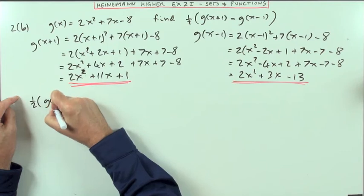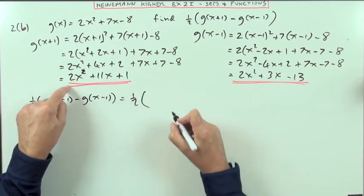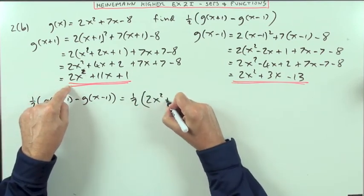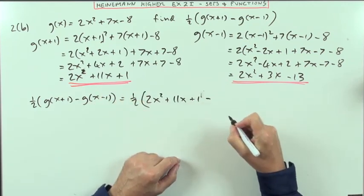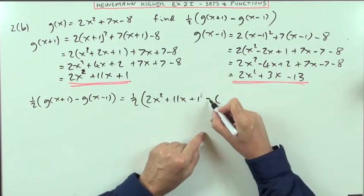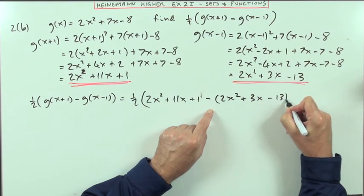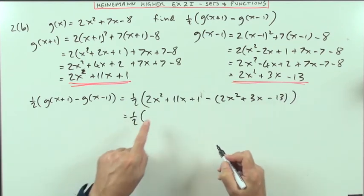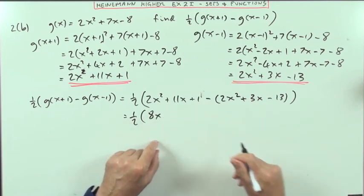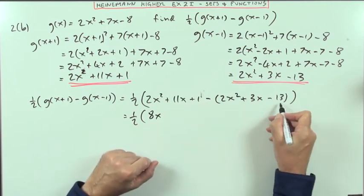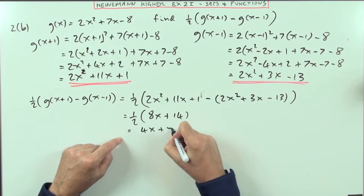Then, half of g(x+1) minus g(x-1) is going to be a half of this expression, which I don't need to put into a bracket, but you could put it inside a courtesy bracket if you liked. But I do need to put this in. If I'm subtracting an expression, I've got to make sure I subtract all the parts. So I'll keep that in a bracket. And then, what have I got there? 2x² - 2x², gone. 11x take away 3x, 8x. 1, take away negative 13, so 1 plus 13 plus 14. So that gives me 4x + 7.